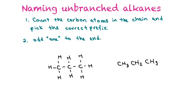Now we'll learn how to name unbranched alkanes — alkanes that are just in a straight line. First, you count the carbon atoms in the chain, then you pick the correct prefix, and then you add 'ane' to the end. I've drawn the same molecule two different ways: the branched-out format and the condensed format showing CH3, CH2, CH3.